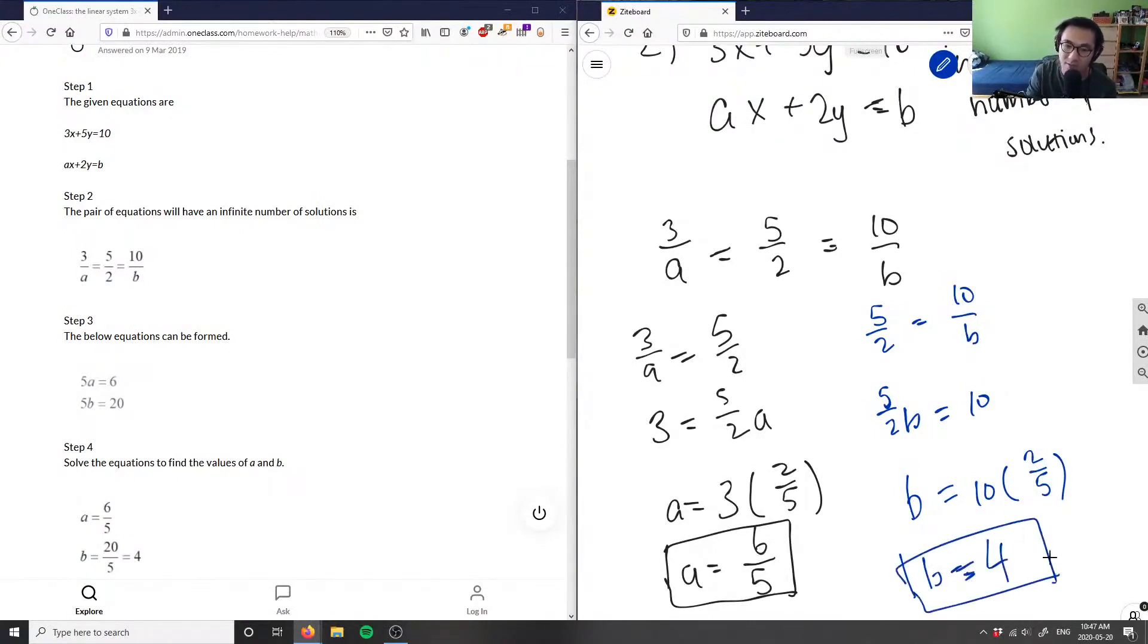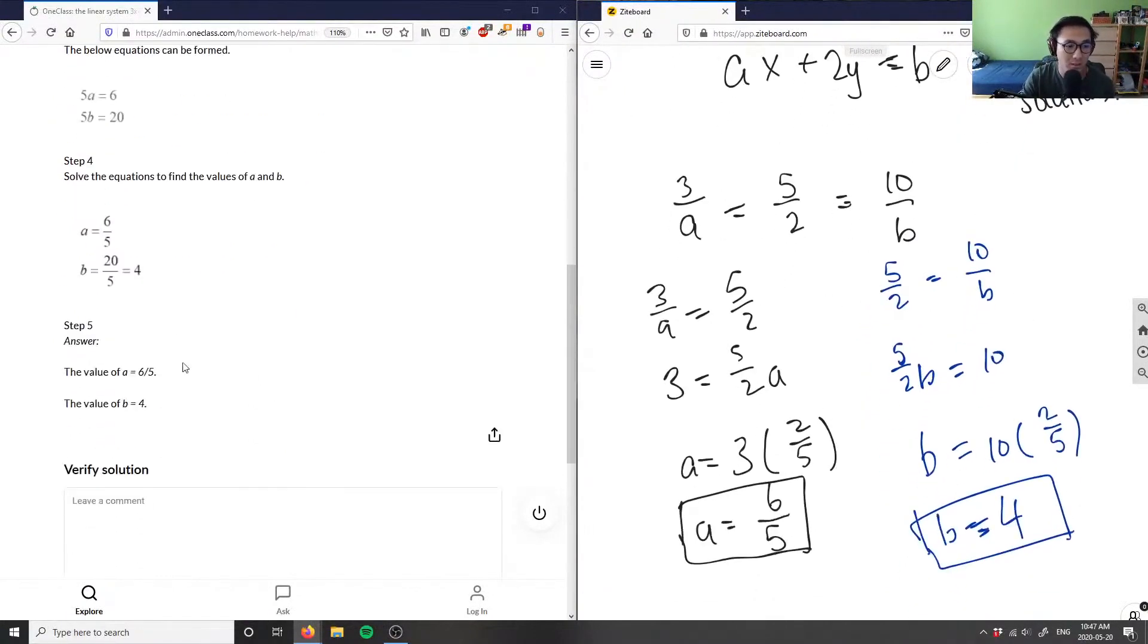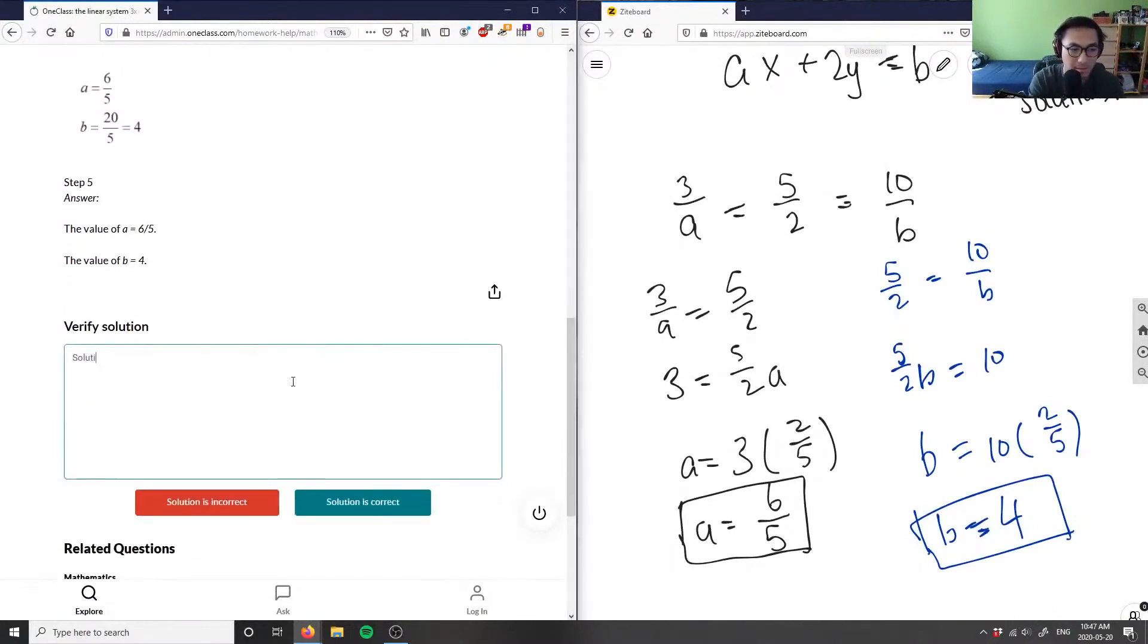So this is our correct answer. a is 6 over 5 and b is 4. As you can see, this is the correct solution. Good analysis.